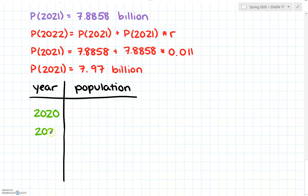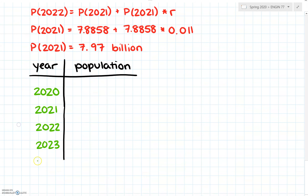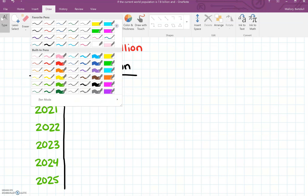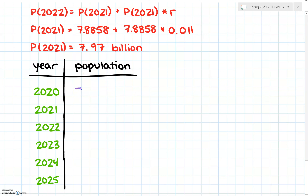The years are 2020, 2021, 2022, 2023, 2024, and 2025. Our population started at 7.8 billion, then we calculated 7.89 billion in 2021, then 7.97 billion in 2022.